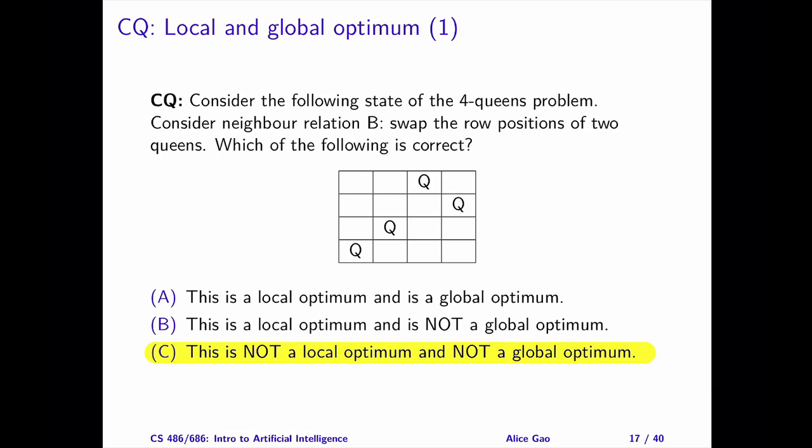The current state is 3201 with a cost of 2. Among the four queens, there are six ways to choose two queens to swap. For example, if we swap the row positions of the leftmost two queens, we get 2301.